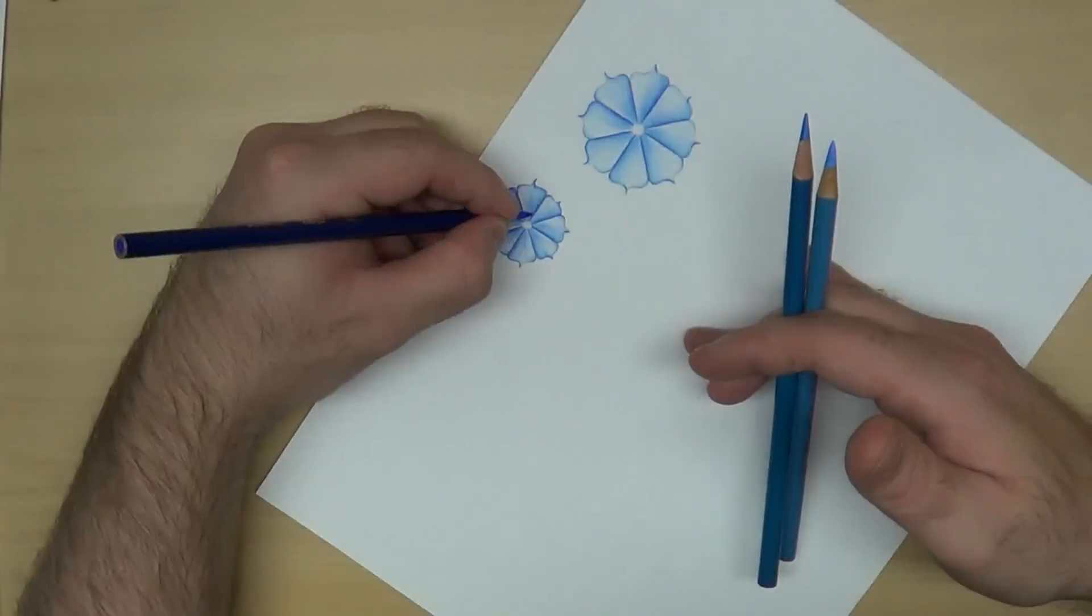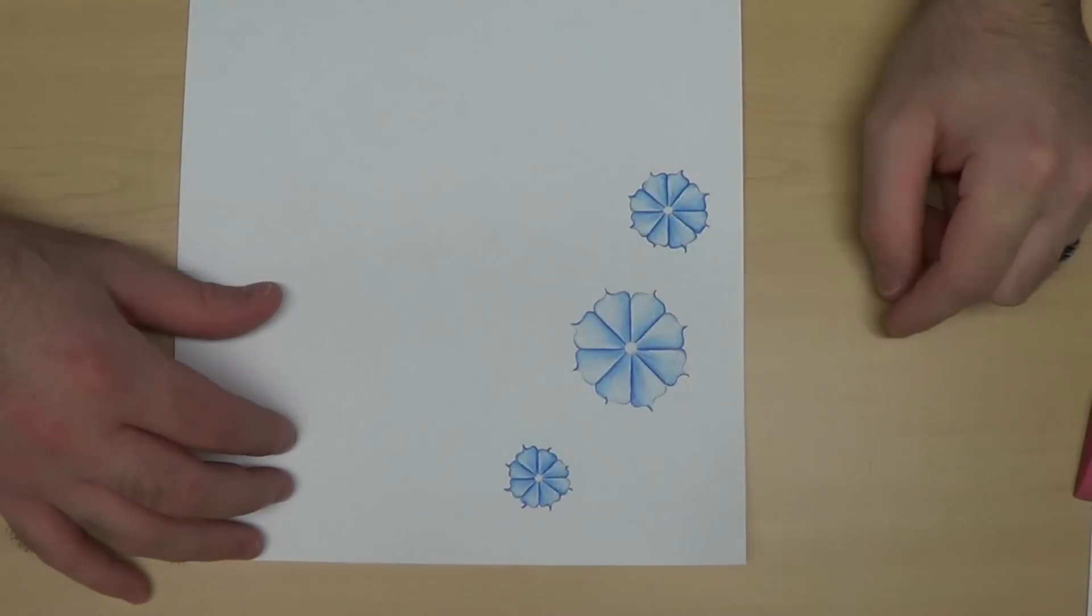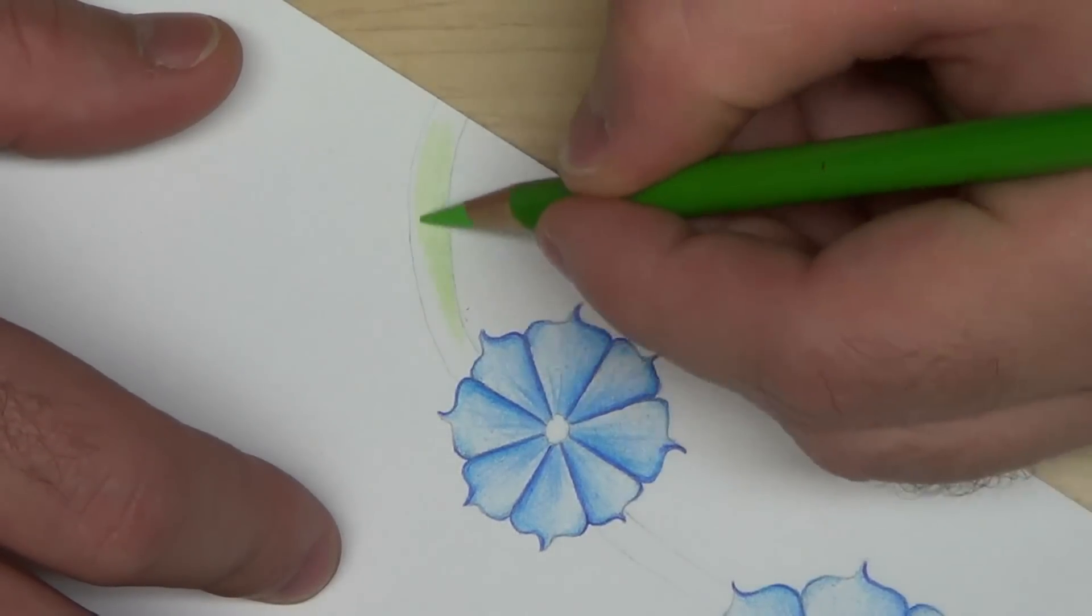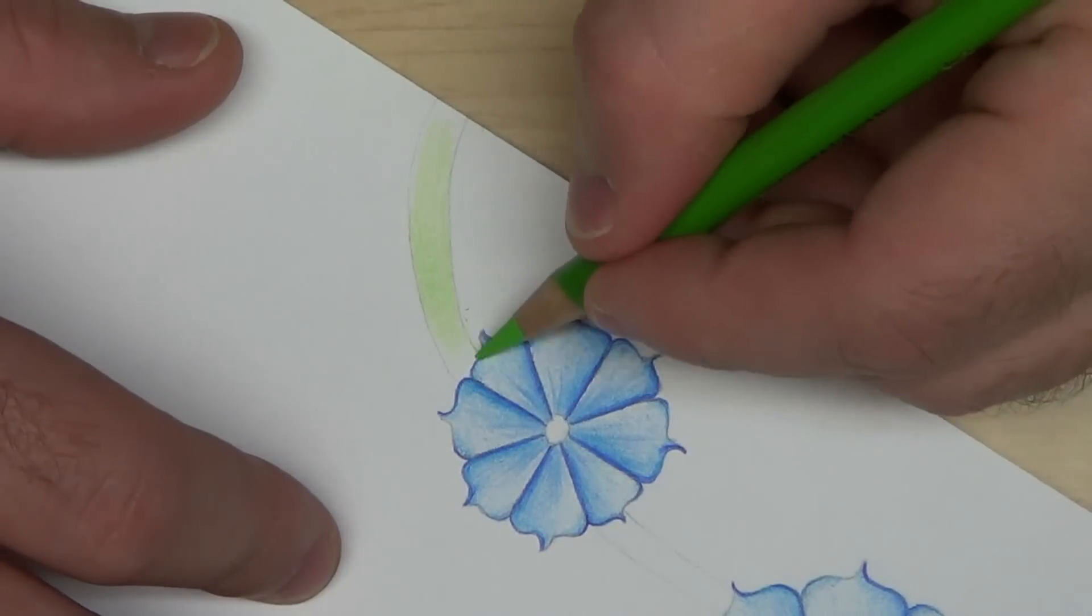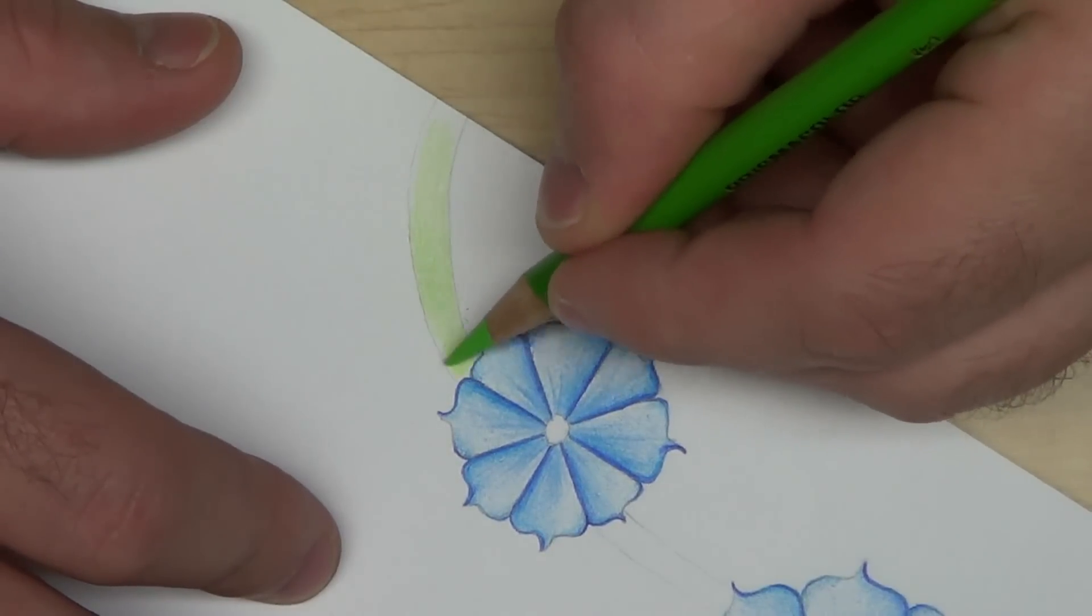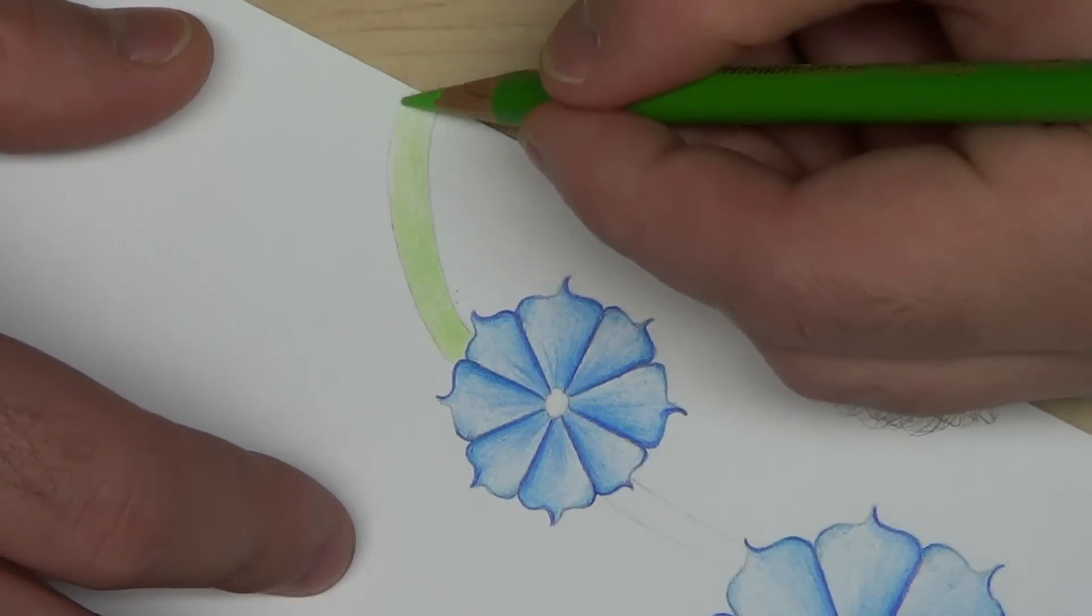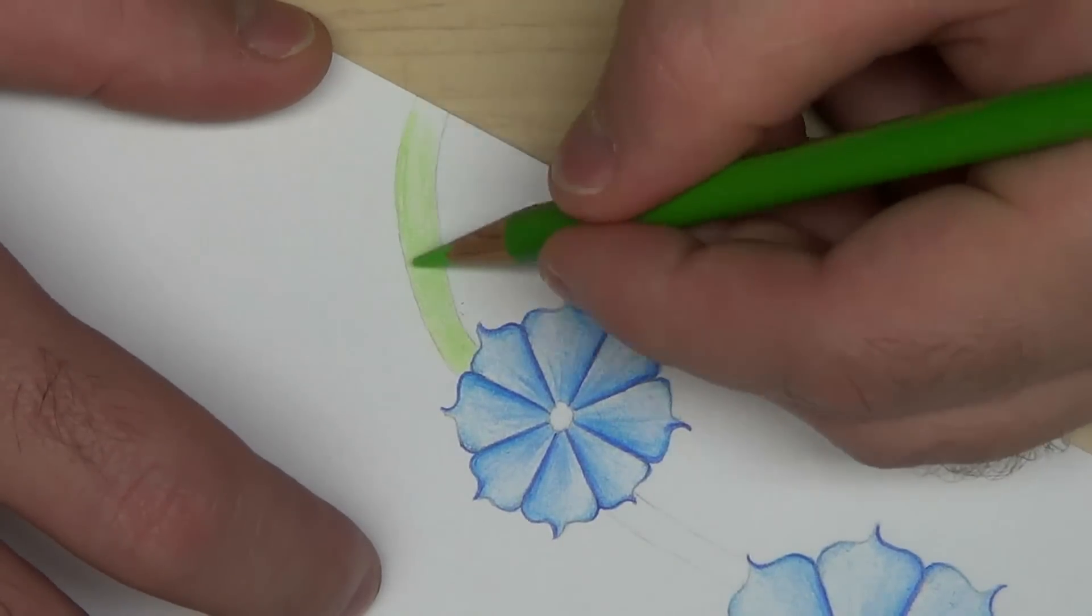You could draw yellow in there or blue. Okay, for the vine, this is the light green. After you draw your vine in there, basically shade it in lightly with the light green.